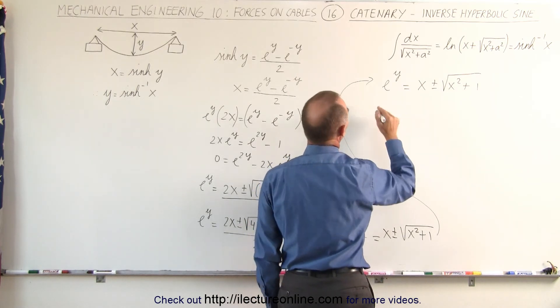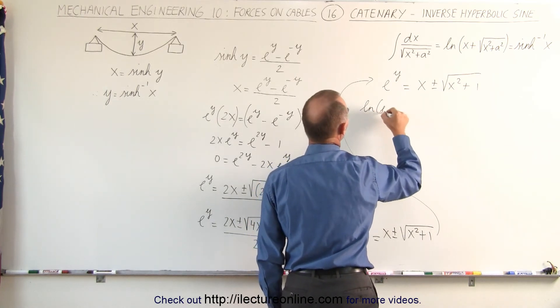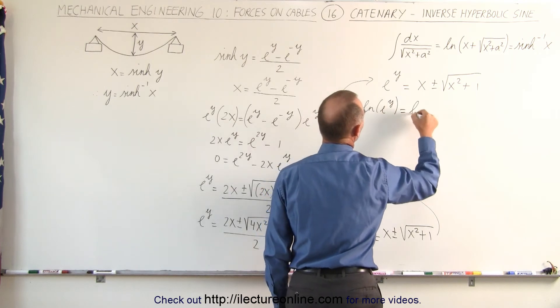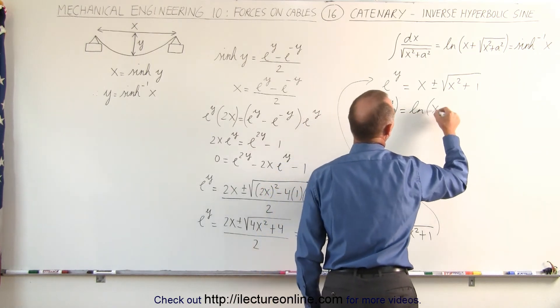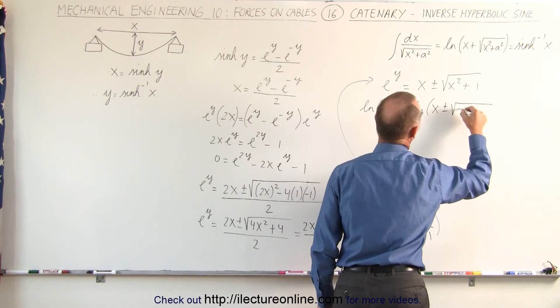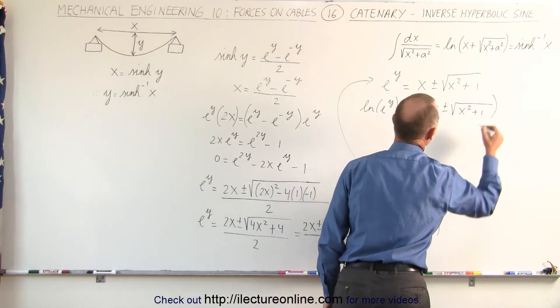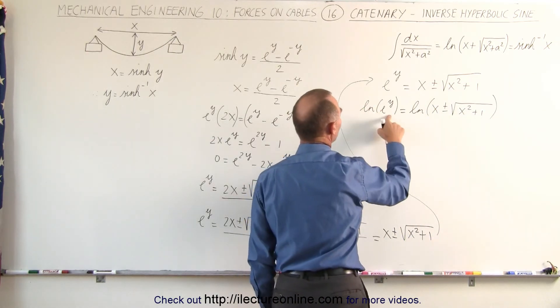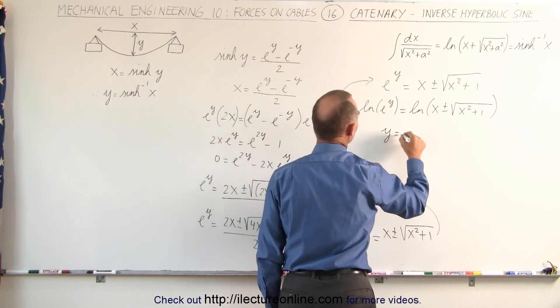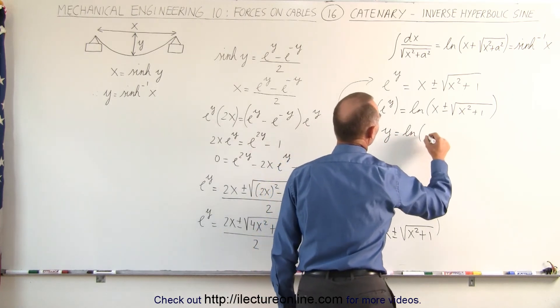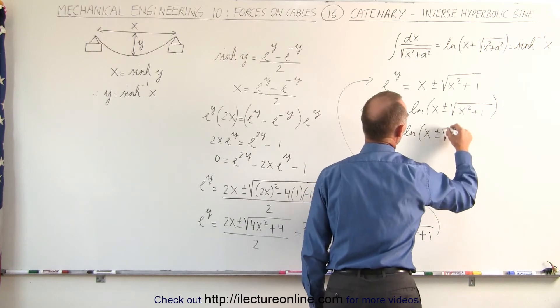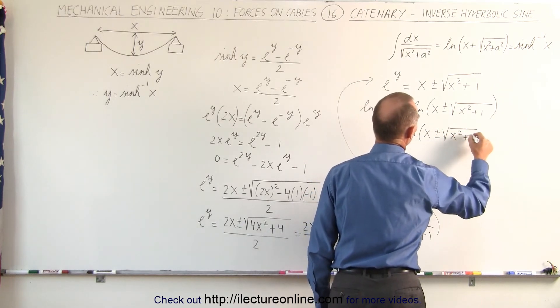So the natural log of e to the y is equal to the natural log of x plus or minus the square root of x squared plus 1. And this becomes simply y. So we end up with y is equal to the natural log of x plus or minus the square root of x squared plus 1.